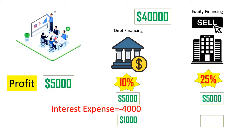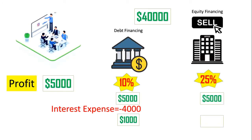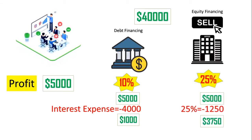With equity financing, you again have no interest expense. But you can only keep 75% of the profit, no matter how much that profit is. So 75% of $5,000 leaves you with $3,750.